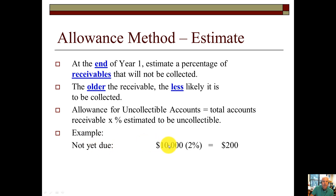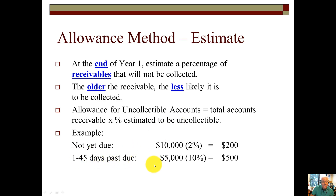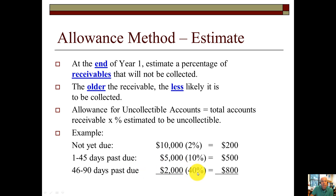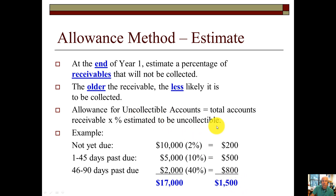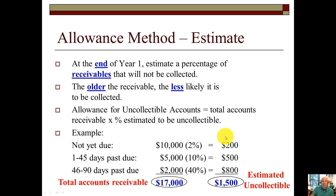For example: not yet due — $10,000 at 2% gives an estimate of $200. Those one to 45 days past due — $5,000 at 10% gives $500. Those 46 to 90 days past due — $2,000 at 40% gives $800. Adding these down, our total estimate of what we don't expect to collect is $1,500. That is the desired ending balance of our allowance for uncollectable accounts — our contra asset account. So $1,500 would be estimated to be uncollectable, while total accounts receivable is higher.